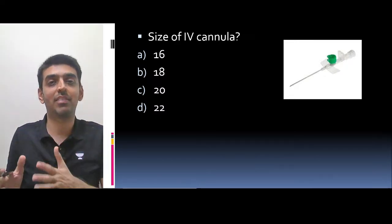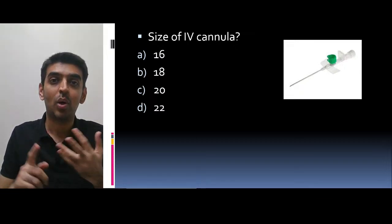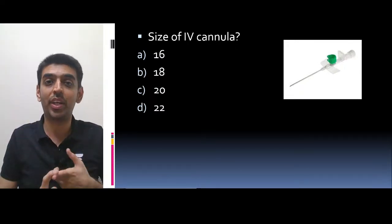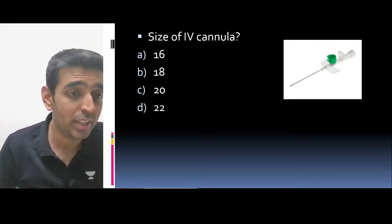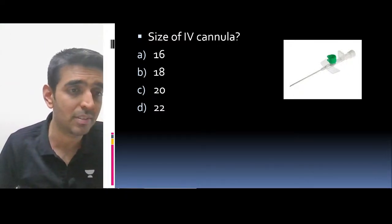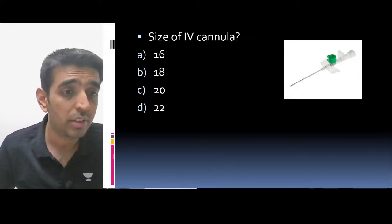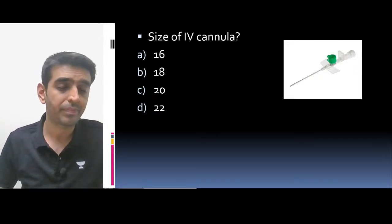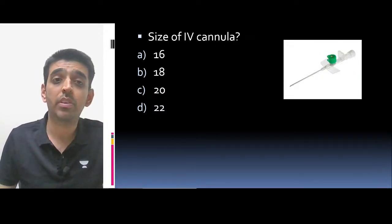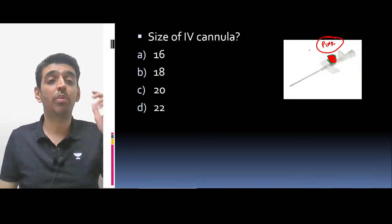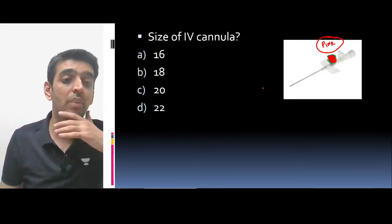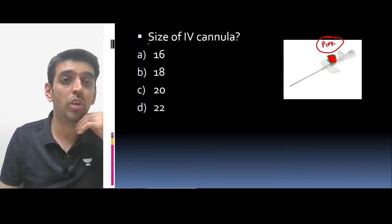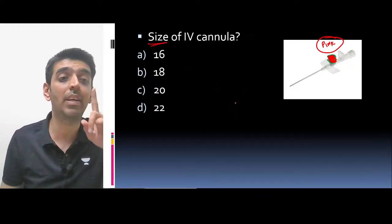Various answers are coming in — Divya says 20, Roohi says 18, Success says B, Buddha says 18, Ruchuja says 16. Most of you are saying option B, that is 18 gauge. Now, instead of green, if I tell you it is a pink color IV cannula, what will be the size? And if it is blue color, what will be the size?